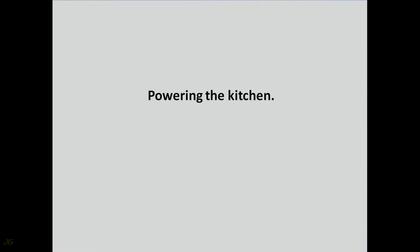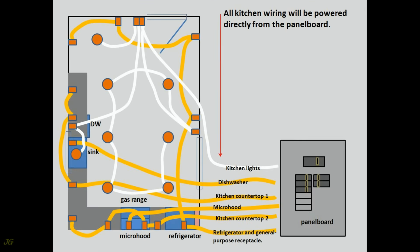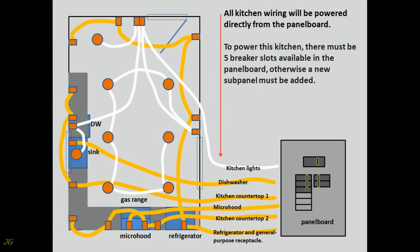Powering the kitchen. All kitchen wiring will be powered directly from the panel board. To power this kitchen, there must be five breaker slots available in the panel board, otherwise a new subpanel must be added.